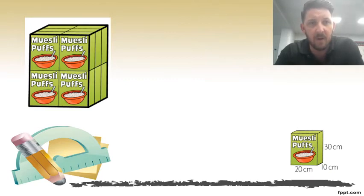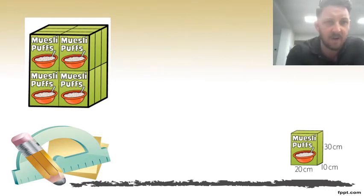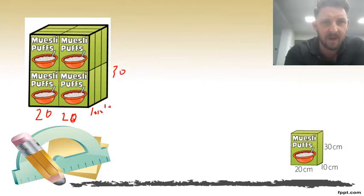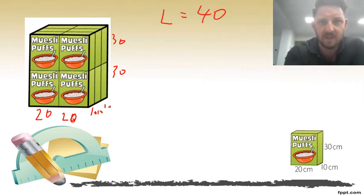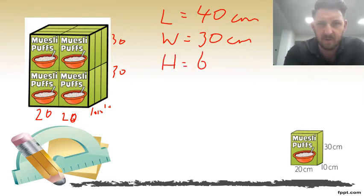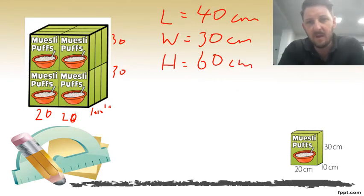I want you to stop the video and see if you can work out the length, width, and height of the combined shape. We have 20 and 20 across, so that's 40 centimeters for the length. We have 10, 10, and 10, so the width is 30 centimeters. We have 30 and 30 in height, so the height is 60 centimeters.